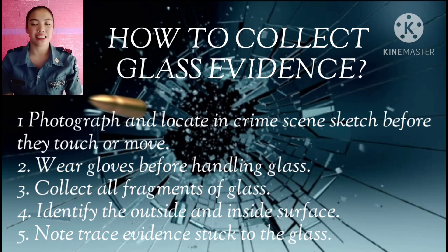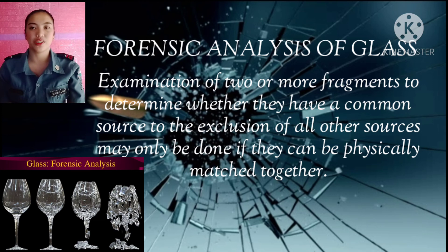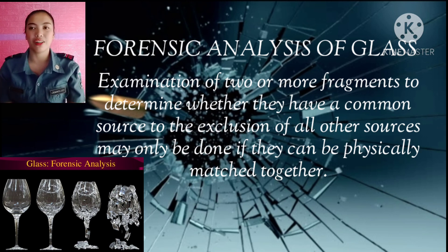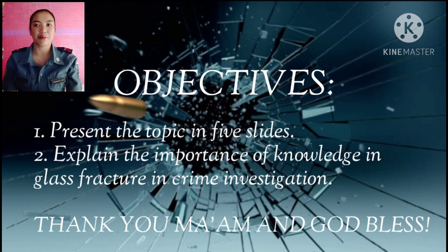Identify the outside and inside of each surface. Note any trace evidence stuck to the glass. Avoid disturbing trace evidence and pick up fragments by the edge. Forensic analysis of glass consists of examining two or more fragments to determine whether they have a common origin. Identifying broken glass fragments as having a common source can only be done if they can be physically matched together. The objectives met were: presenting the topic in five slides and explaining the importance of glass fracture in crime investigation.